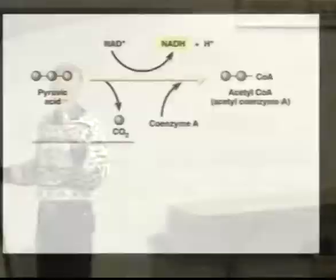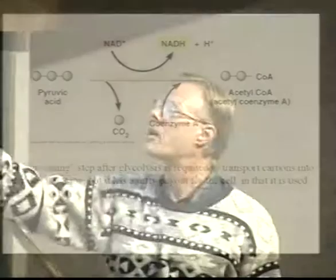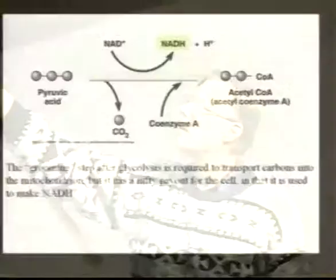We've got our pyruvates — we're ready for the grooming stage. In the grooming stage, we generate CO2 and NADH. We take pyruvic acid, pop off a carbon as carbon dioxide, and in that step take NAD to produce NADH — skimming off a couple of high-energy electrons. We bind coenzyme A to this molecule to produce acetyl coenzyme A.